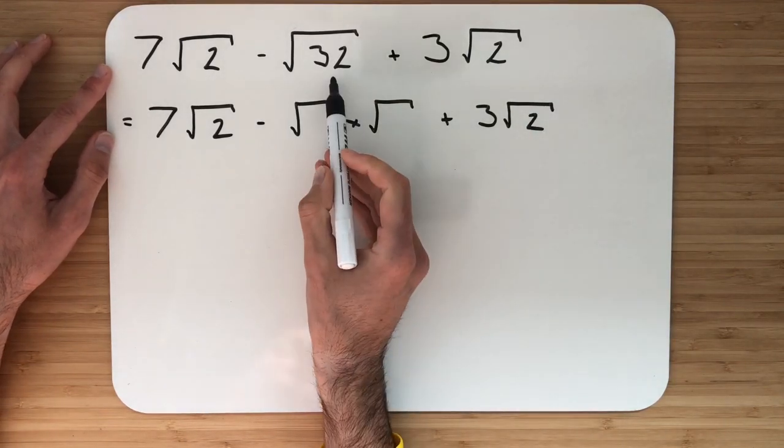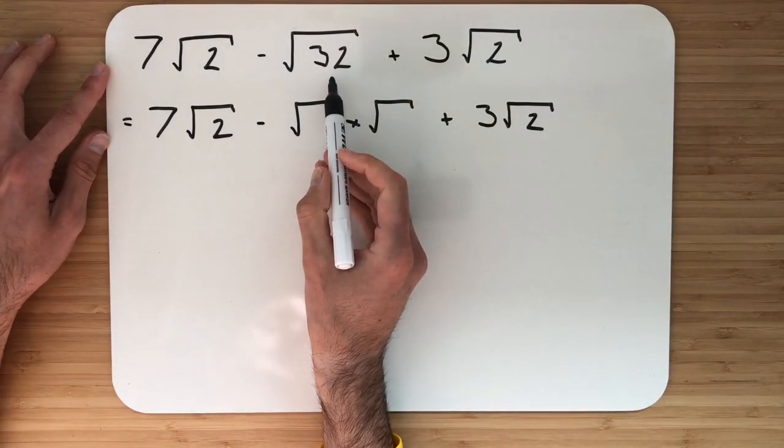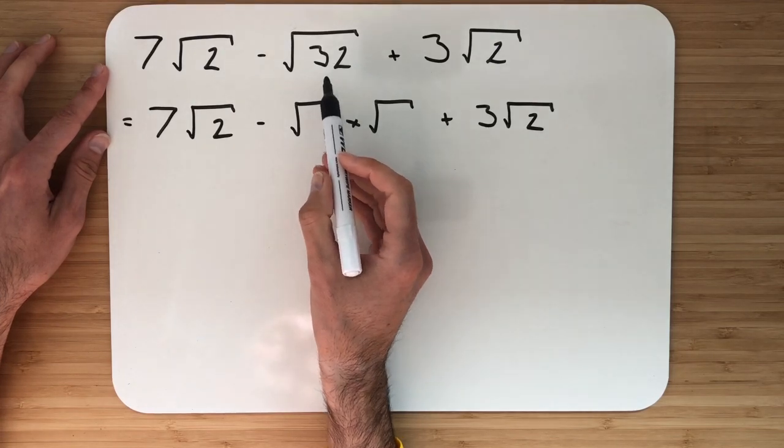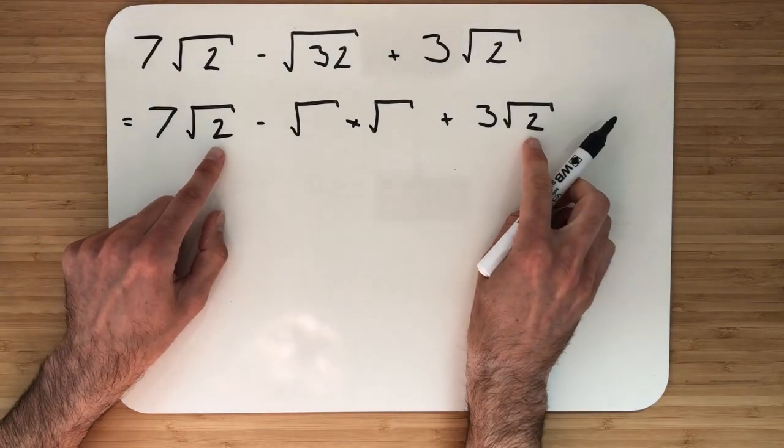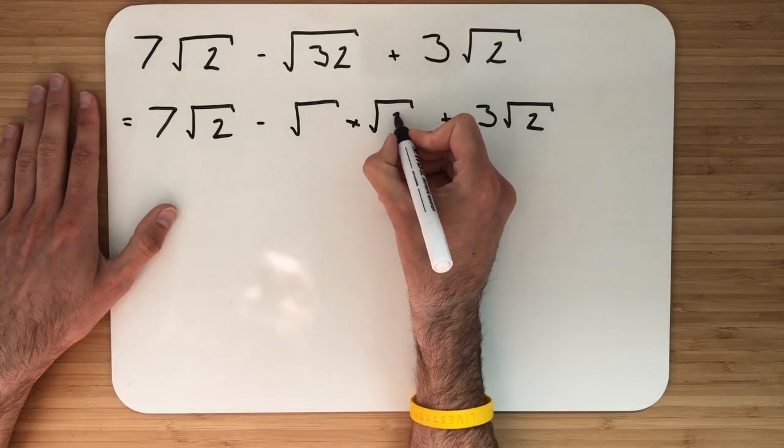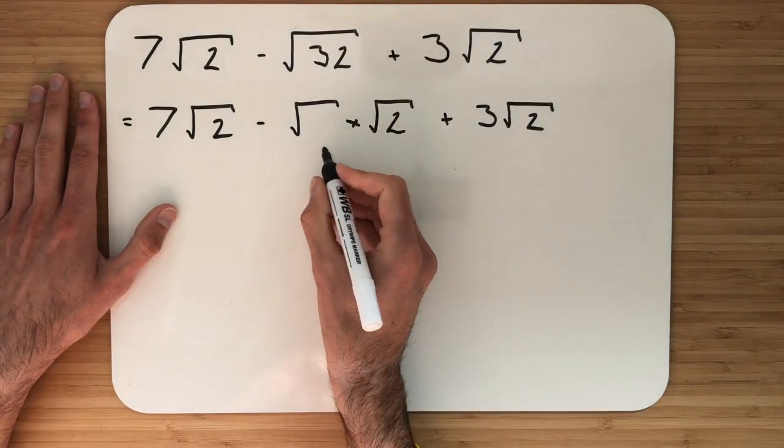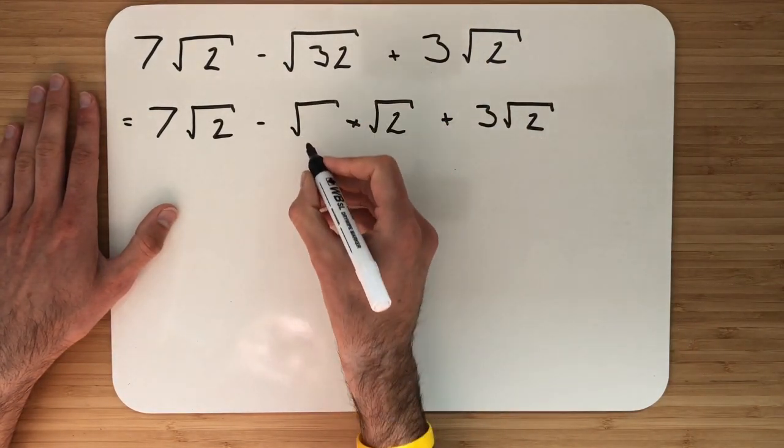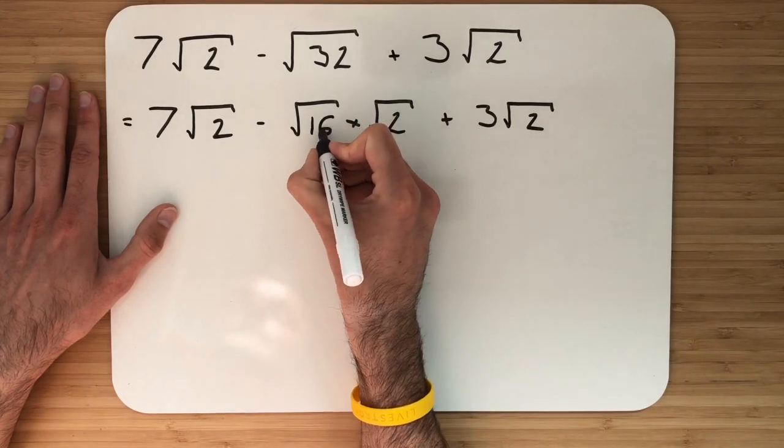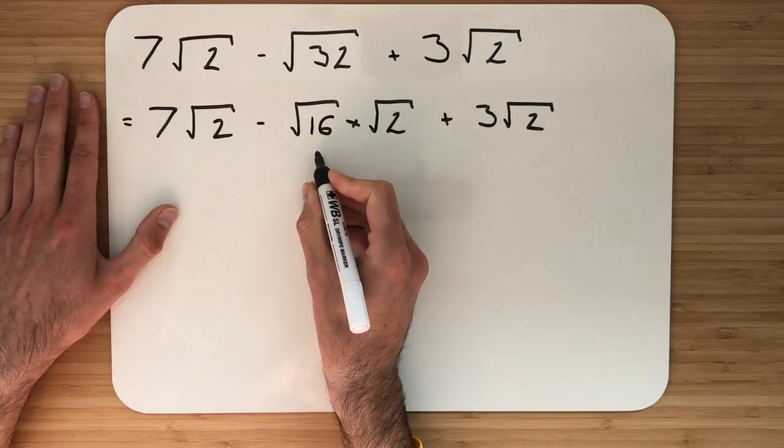Okay, two numbers are multiplied together to give me 32. One of them has to be square, and it has to have a √2 involved. So let's just put that √2 here. So what number can I multiply by 2 to give me 32? Well, it is 16. Is 16 a square number? Yes, it is. Perfect.